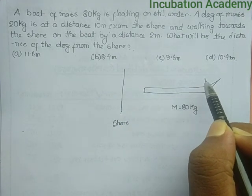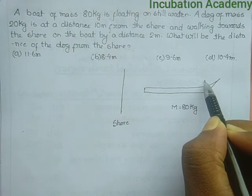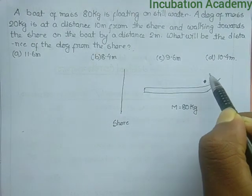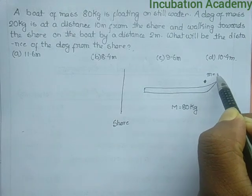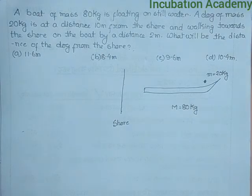The dog is on the boat at a distance 10 meters from the shore and is walking towards the shore on the boat by a distance 2 meters. The dog's mass is 20 kg.